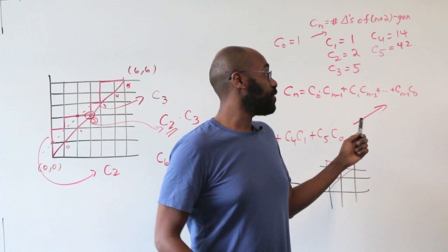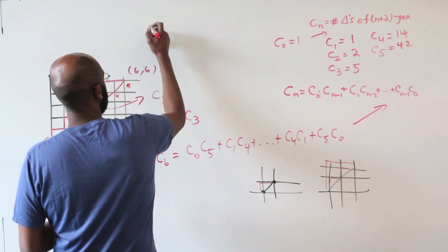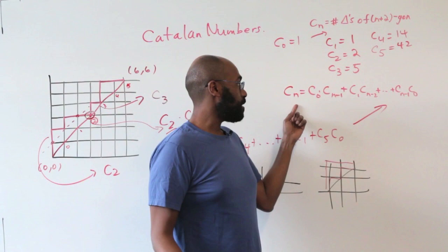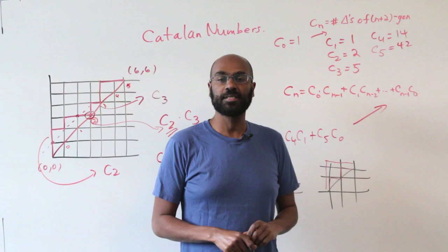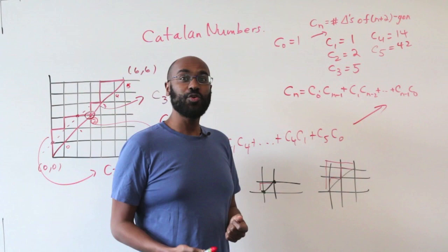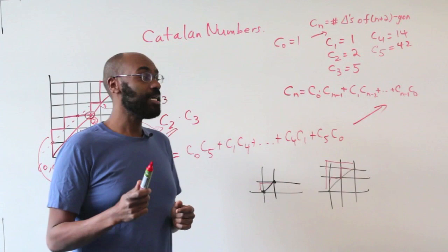It turns out this sequence counts a whole lot of things, and it actually has a special name: they're called the Catalan numbers. If you have a particular value of n and want to know what that value is, you can use this recursion to figure it out. But it would be really great to have an explicit formula for C_n in terms of n. If you want to find out what that is, tune into the video by Michael Penn from Randolph College, who'll give a detailed construction for how to find these values explicitly.